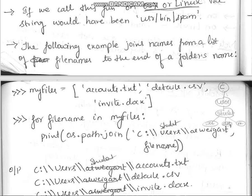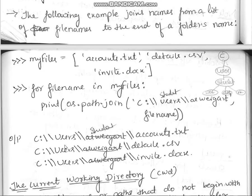So the output will show 'swigart\accounts.txt', then 'swigart\details.csv', and 'swigart\invite.docs'. You can also use a folder named 'student' instead of 'swigart'. This way you can specify the path of the folder where you want to store your files, attaching all three files from the list to that folder path.